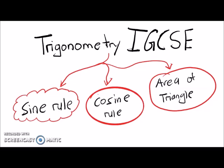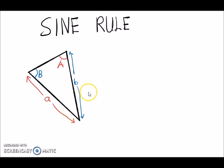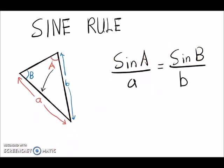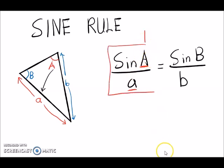Now to use the sine rule, the angle will be represented by a capital letter and the length of the side will be represented by a small letter. The angle and its opposite side form a pair. The formula for the sine rule pairs an angle with the length of its opposite side.